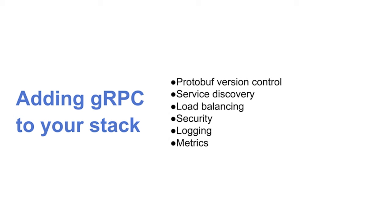Service discovery is hugely important because you rarely hardcode service names and locations. You want some form of service discovery — Zookeeper, etcd, Consul, things like that. This is specifically machine-to-machine discovery: a registry where the actual servers implementing each service are registered, allowing you to change that dynamically. If you want to pull servers out of rotation or add servers to a cluster, you do that in your service registry, and all your gRPC clients become aware and route traffic accordingly.